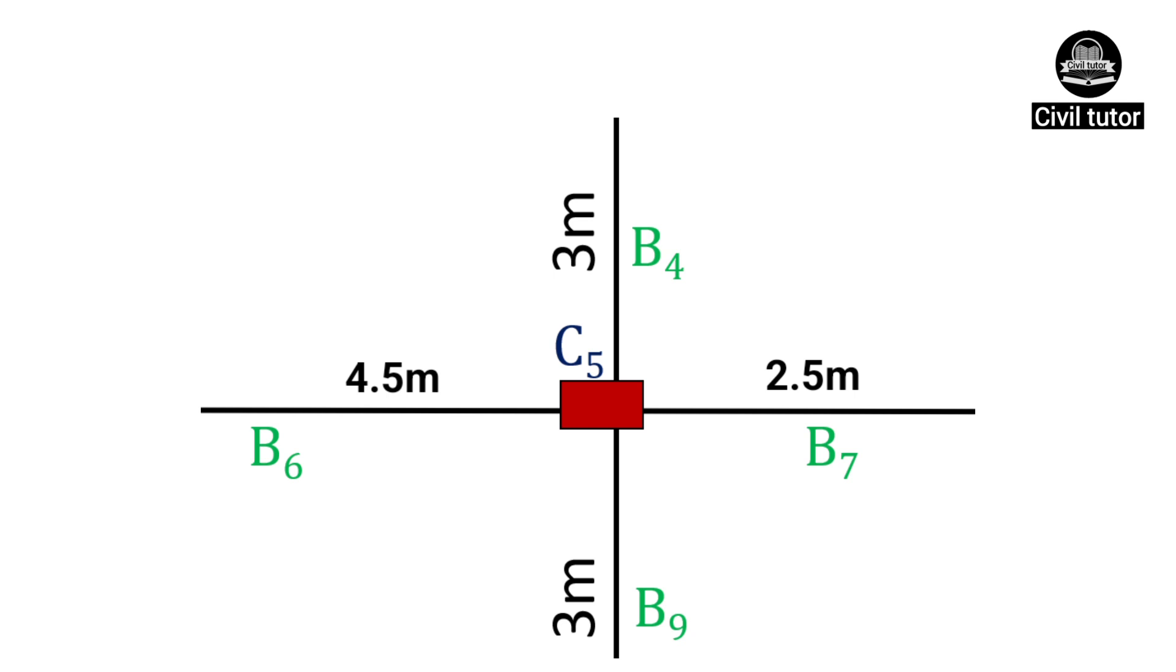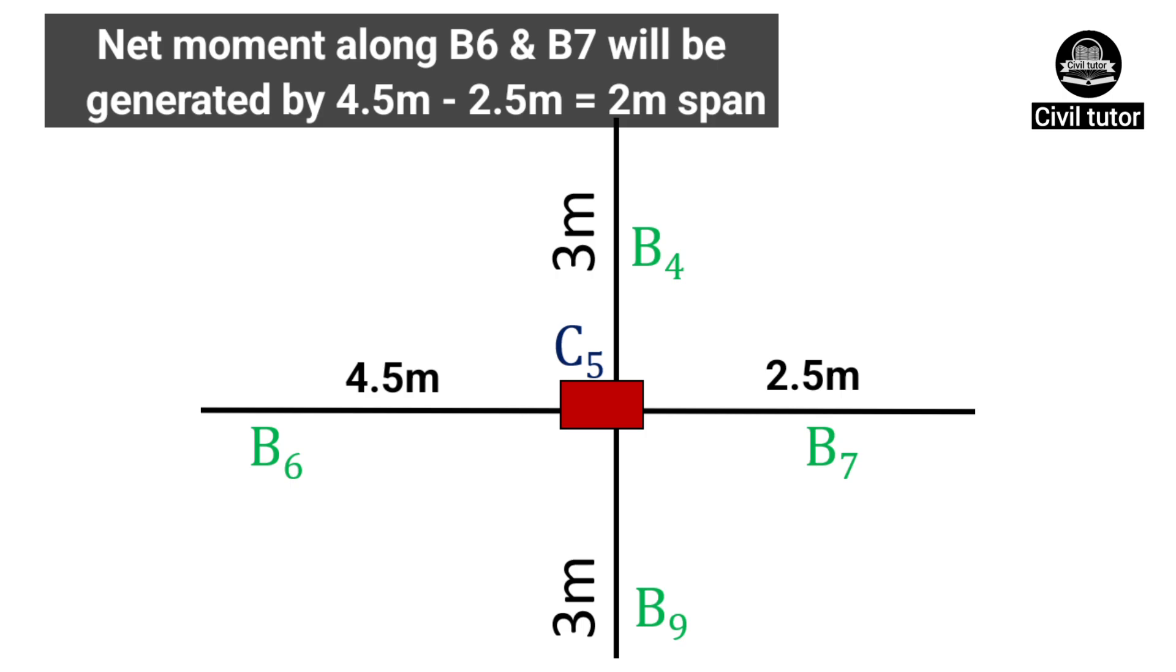Column 5 is connected by 4 beams, i.e. B4, B6, B7, and B9. B6 and B7 lie on the same axes, therefore, the net moment along B6 and B7 will be created by the span 4.5 - 2.5m, i.e. 2m along B6. The B4 and B9 lie on the same axes, and the net moment along these two beams will be created by 3 - 3m, i.e. 0m span, therefore, the major axes of bending will be along B6, and the depth of C5 is to be kept perpendicular to the span B6.